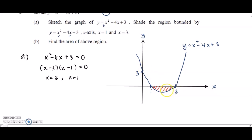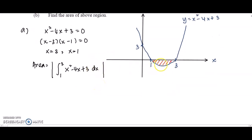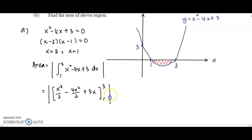Take note that for area under the x-axis, integrating will give a negative value. To find the area, we impose the modulus sign so the result is always positive. We integrate from 1 to 3 of x squared minus 4x plus 3 with respect to x, placing everything inside the modulus sign. Integrating gives x cubed over 3 minus 4x squared over 2 plus 3x, with limits 1 to 3.